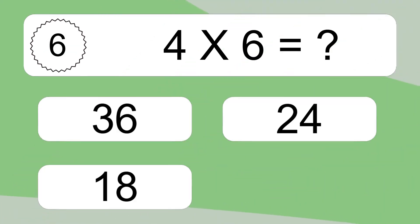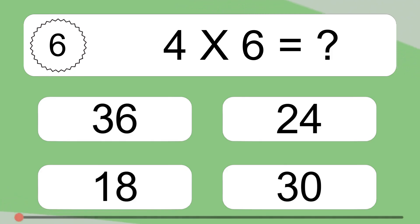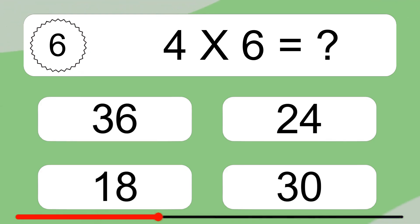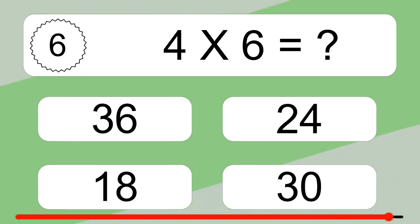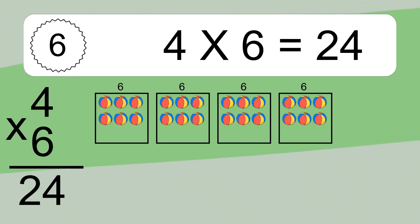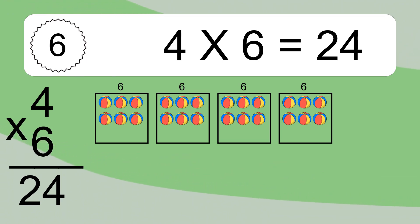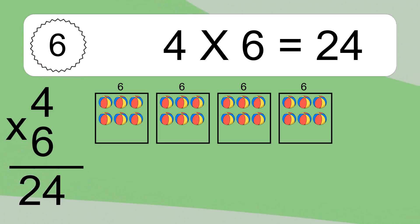4 times 6 equals what? 4 times 6 equals 24. We have 4 boxes, and each box has 6 colorful balls inside. If you count all the balls in all the boxes together, you will have 4 times 6 balls. This equals 24 balls.